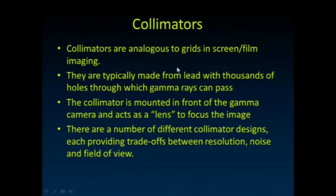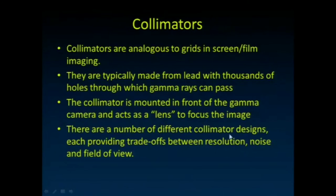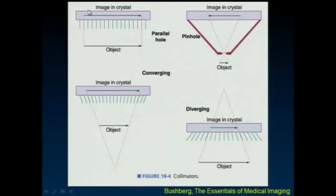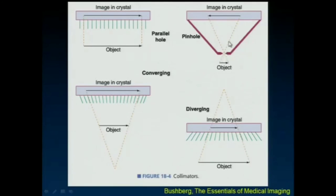Let's talk about collimators. They're typically made from lead and have thousands of holes through which gamma rays can pass. Mounted in front of the crystal, they act like a lens to only accept gamma rays coming from a particular direction. There are a number of different collimator designs, each providing trade-offs between resolution, noise, and field of view. A parallel hole collimator accepts only gamma rays traveling parallel to each other. A pinhole collimator works similarly to how x-ray imaging uses a point source — all gamma rays must travel through a single pinhole to form the image.